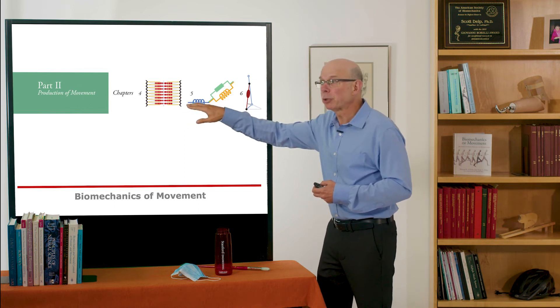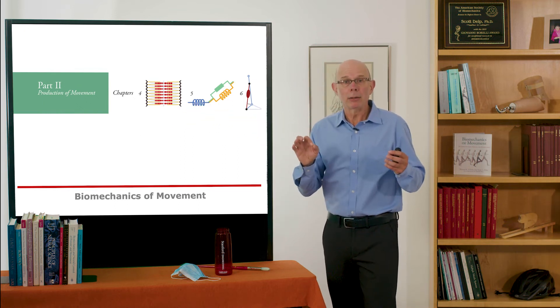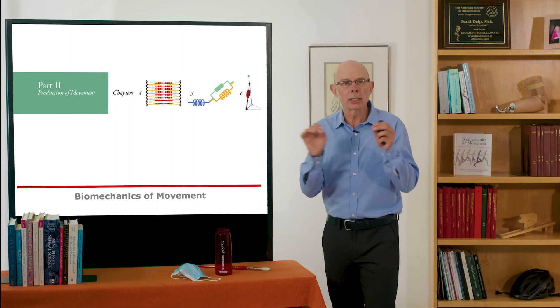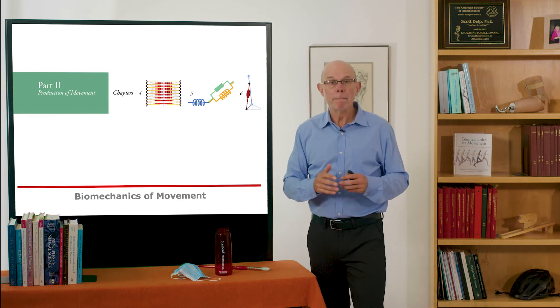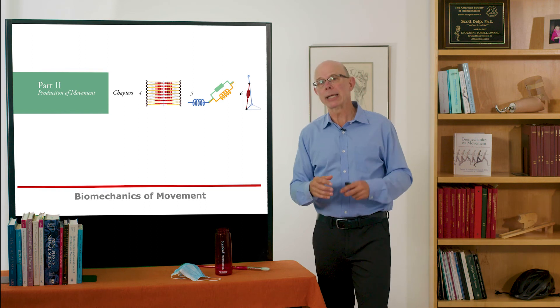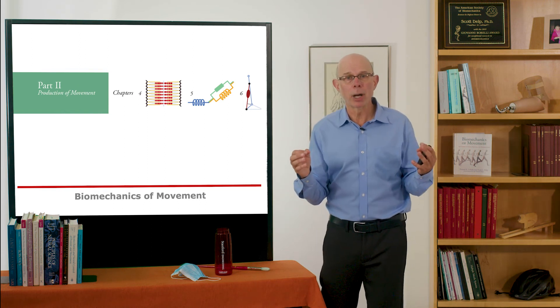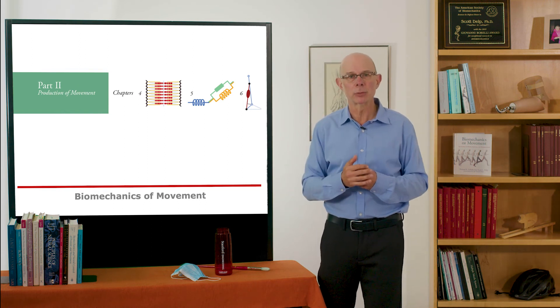In these first two chapters we assume that muscles are acting in isolation, but in chapter six we move on to musculoskeletal geometry. That is how muscles are installed in the body and how that geometry affects muscle function.